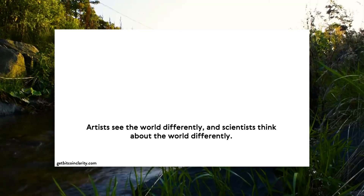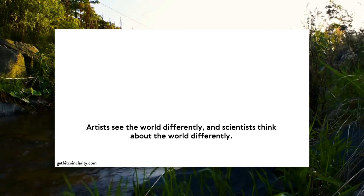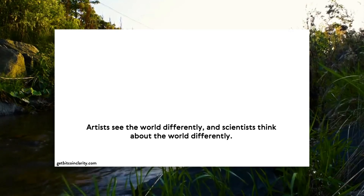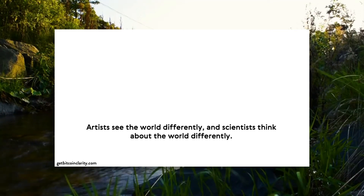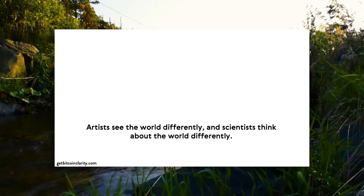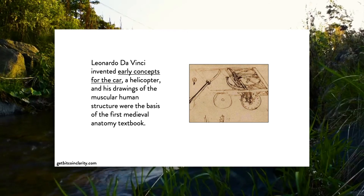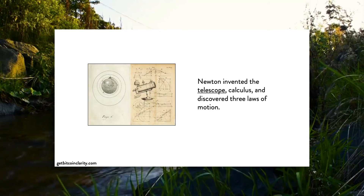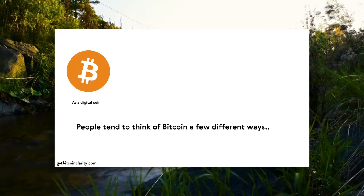Artists see the world differently and scientists think about the world differently. Understanding how perception is limited, we can learn a lot from both. Both Leonardo da Vinci and Newton were artists and scientists, but we culturally perceive da Vinci as the artist and Newton as the scientist. Yet da Vinci's car clearly comes out of a scientific mind, and Newton's drawings come out of an artistic mind. Modern people don't think about it that way anymore.